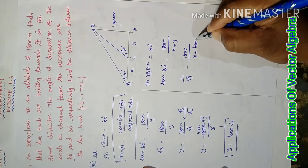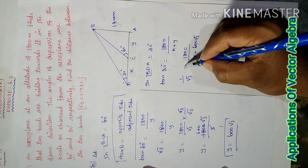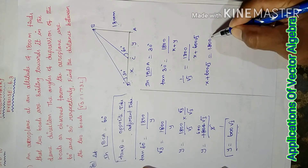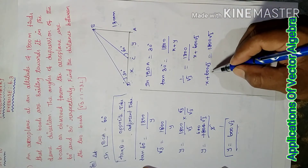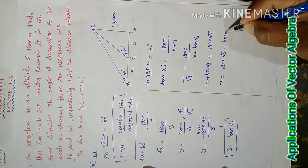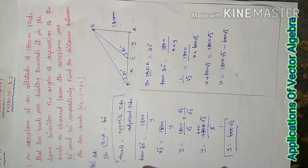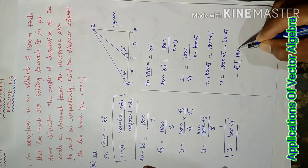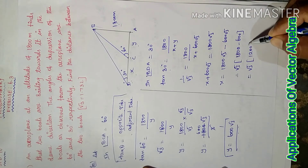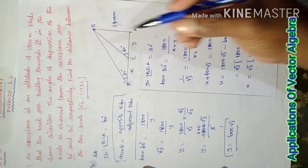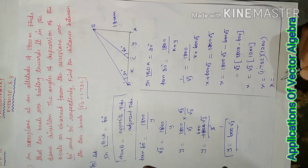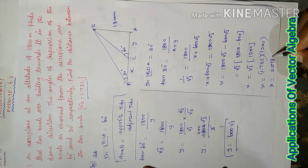Substituting y equals 600√3: cross multiplying gives x plus 600√3 equals 1800√3. Therefore x equals 1800√3 minus 600√3, which equals root 3 into (1800 minus 600) equals root 3 into 1200. Applying root 3 equals 1.732: x equals 1.732 into 1200 equals 2078.4 meters.